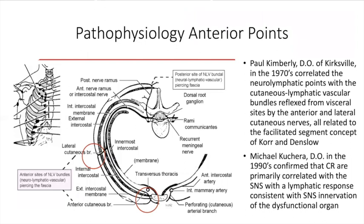The pathophysiology of the anterior points that Dr. Chapman described — here is a short map of some of the points indicating disease. These points, which Dr. Owens wrote about, were much later correlated by Paul Kimberley from Kirksville. In the 1970s, Paul Kimberley described these neurolymphatic points and correlated them with visceral sites by the anterior and lateral cutaneous nerves, indicated here by these two circles. We can trace the nerve all the way around back to the spinal cord. Dr. Kimberley correlated this with the facilitated segment concept proposed by Drs. Kaur and Denslow.